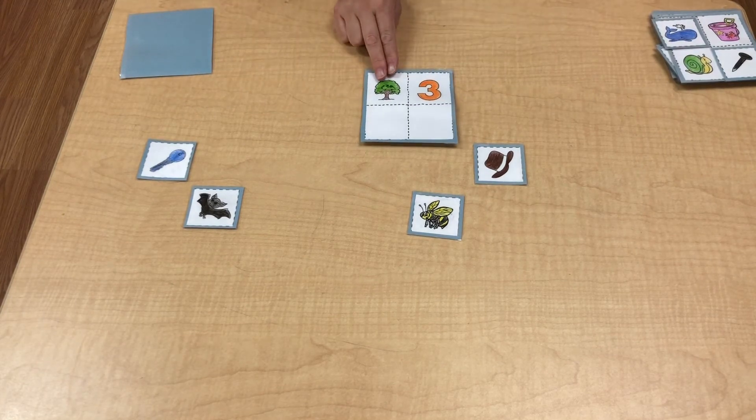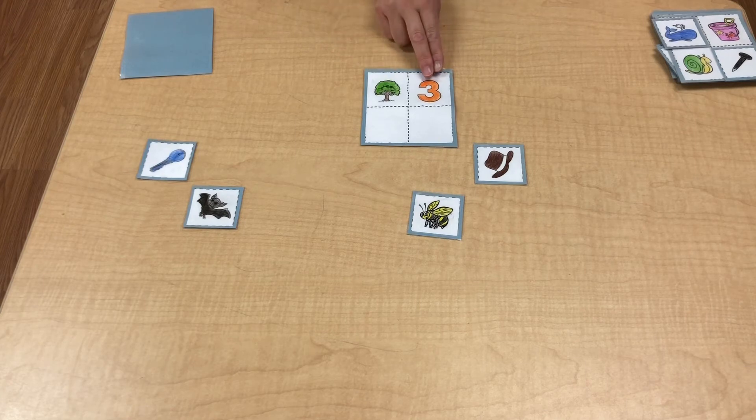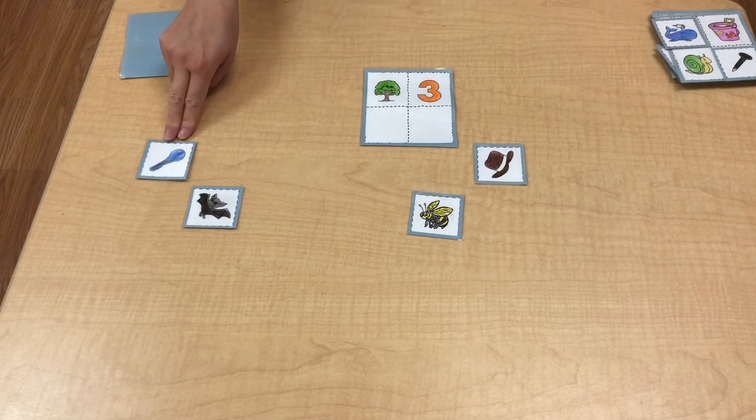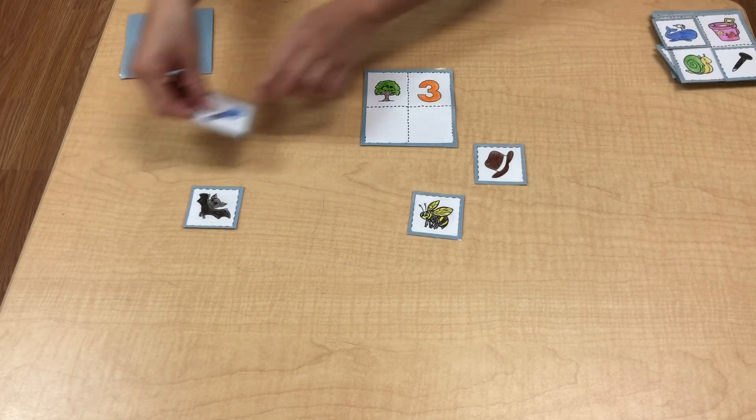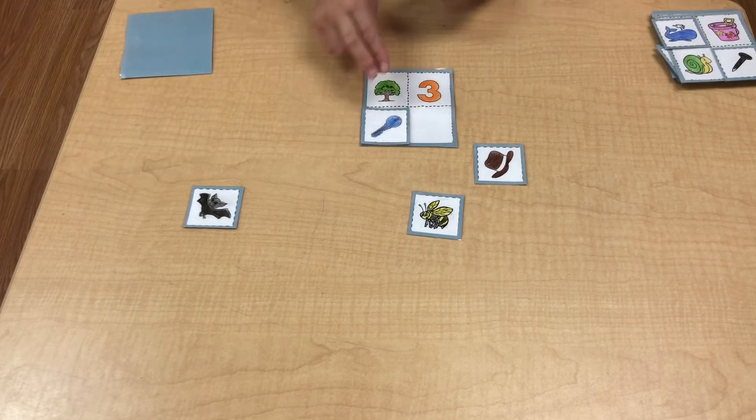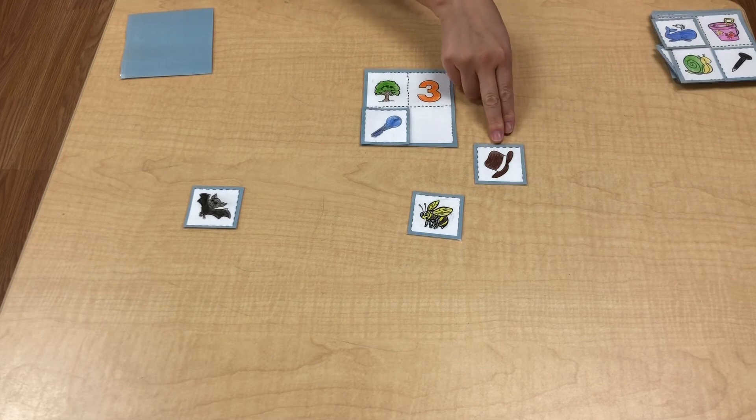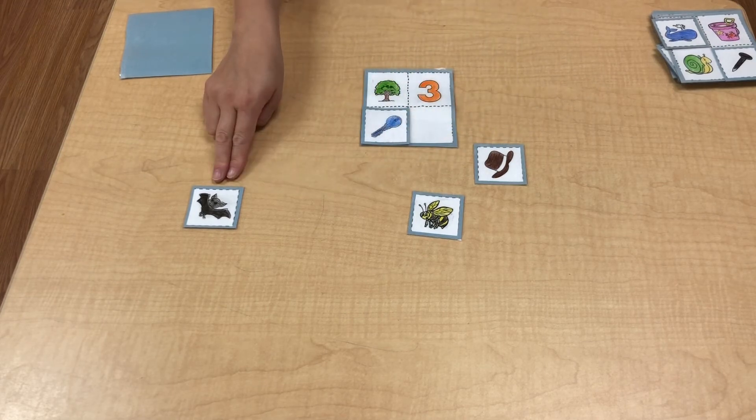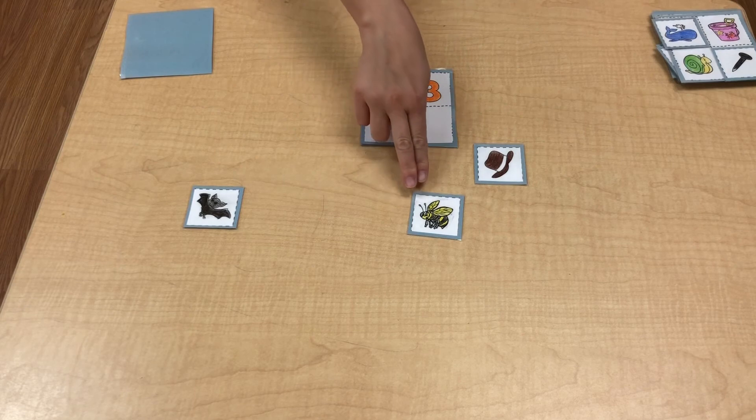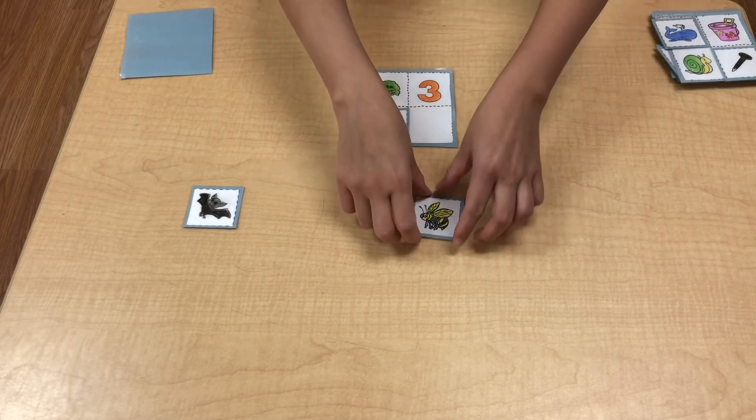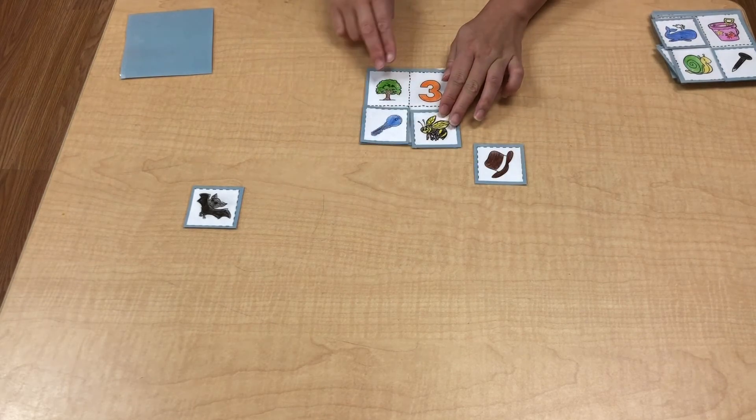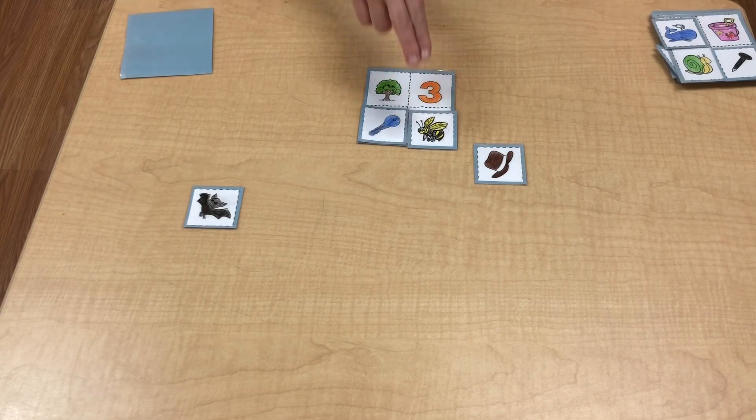Tree. Three. Key. Key. Yes. Tree. Key. Three. Key. Bat. No. Hat. No. Bee. Yes. Tree. Bee. Three. Bee.